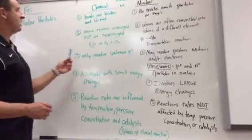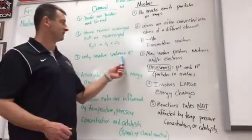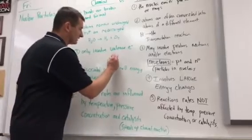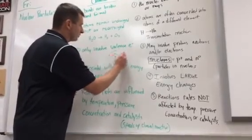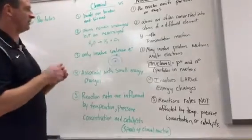And that leads us to our third point, where chemical reactions only involve valence electrons. So you've got your nucleus, and then you've got these circles with these electrons, and the valence electrons are the outer shell.